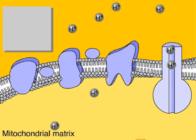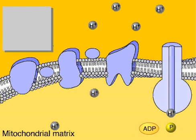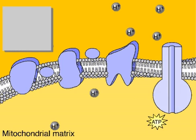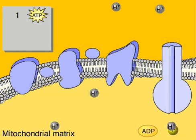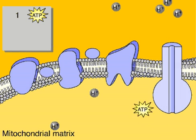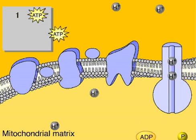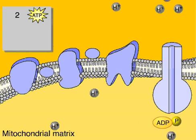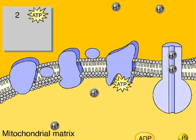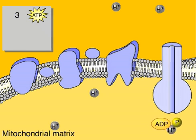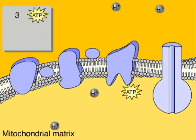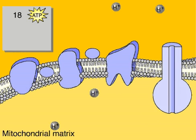Under normal conditions, almost all the ATP produced in the process of cellular respiration is manufactured by electron transport and chemiosmosis — about 34 ATPs for every glucose consumed.